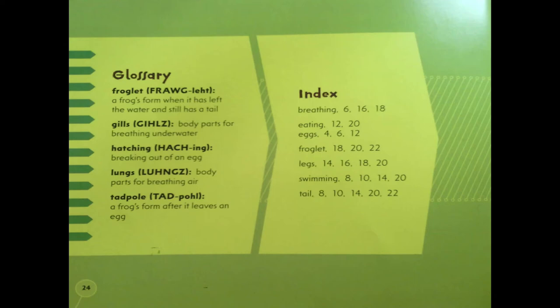Let's look at the words that the author found important in this text. The first one is froglet — it even shows you how to pronounce it — a frog's form when it has left the water and still has a tail. The next keyword was gills: body parts for breathing underwater. Hatching: breaking out of an egg. Lungs: body parts for breathing air. And finally, tadpole: a frog's form after it leaves an egg.